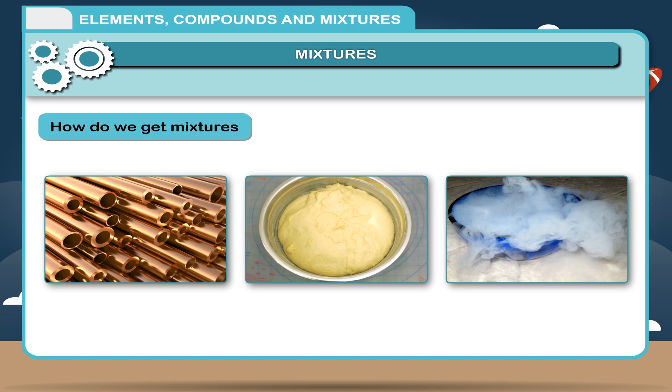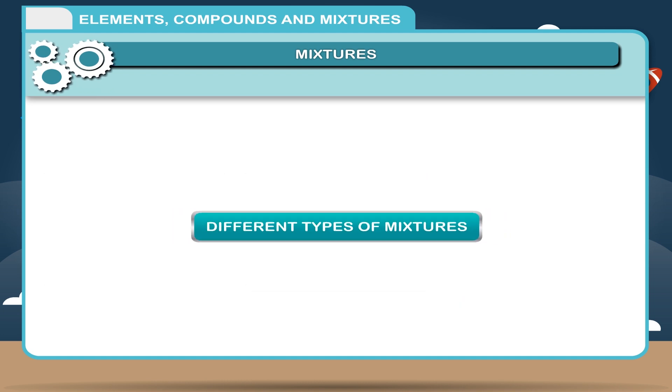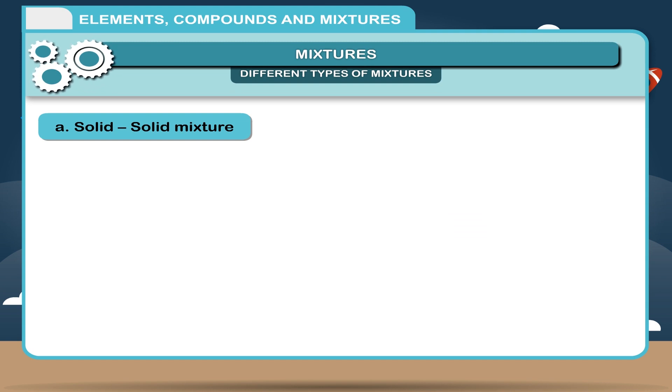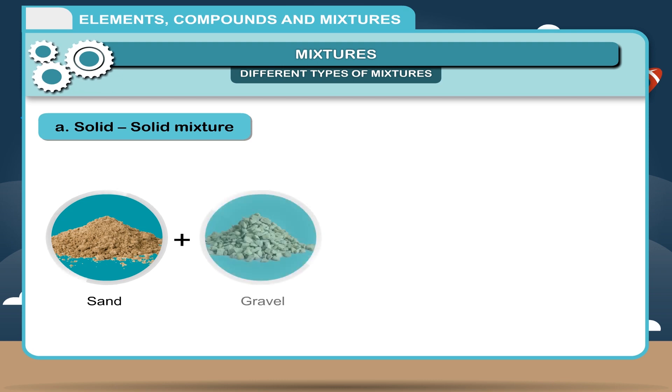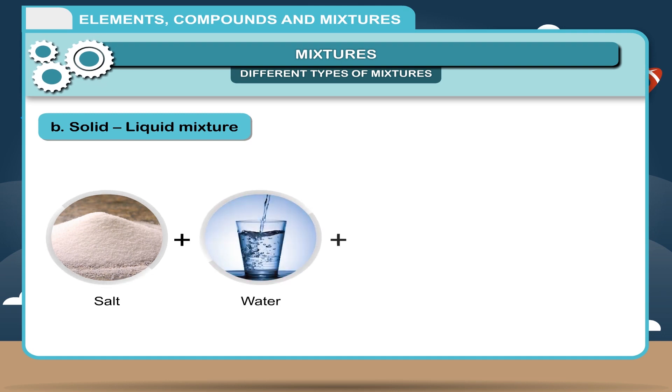It may be by mixing solid with solid, or solid with liquid, or solid with gas, etc. Different types of mixtures: A) Solid-solid mixture: sand plus gravel plus rice plus dal. B) Solid-liquid mixture: salt plus water, sugar plus water.